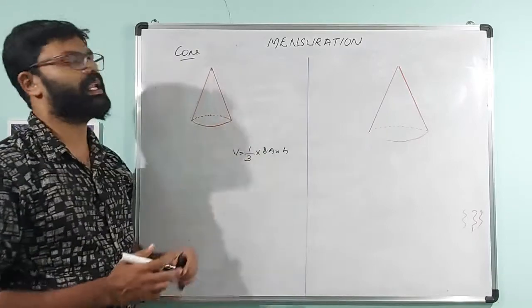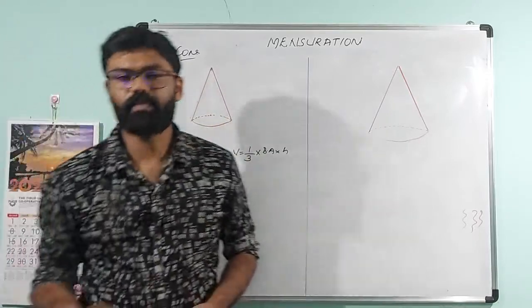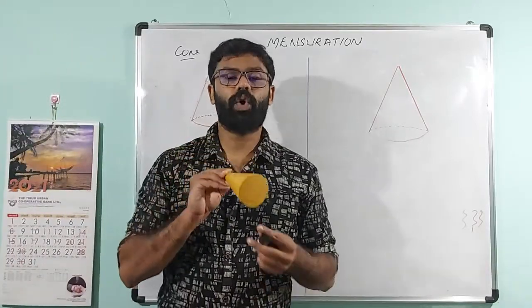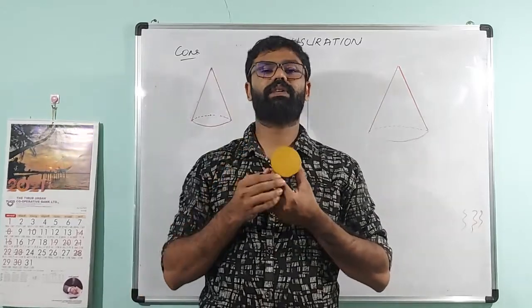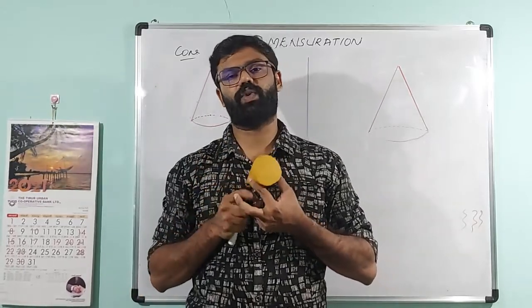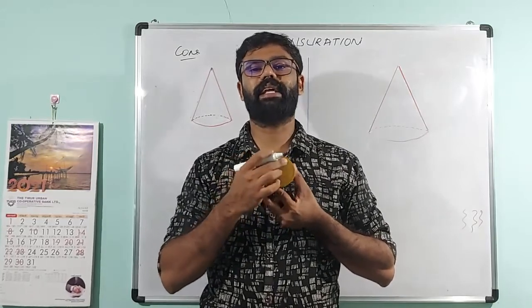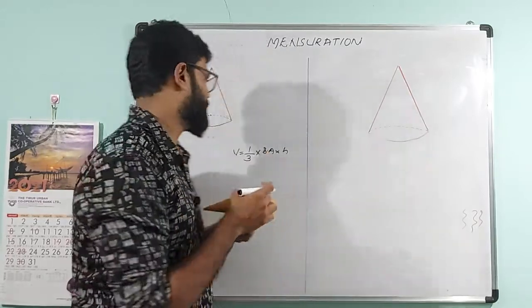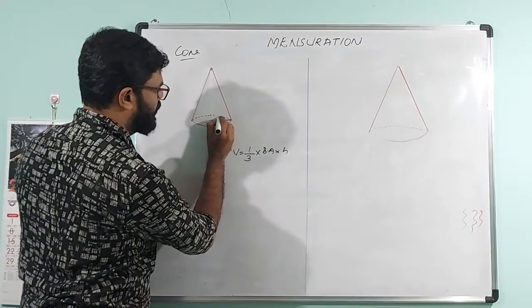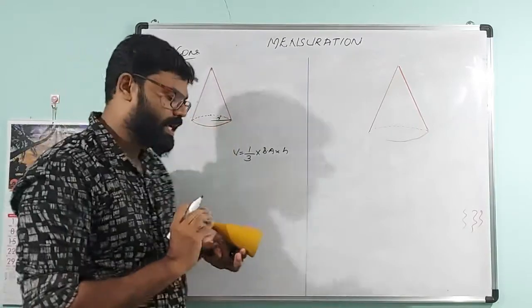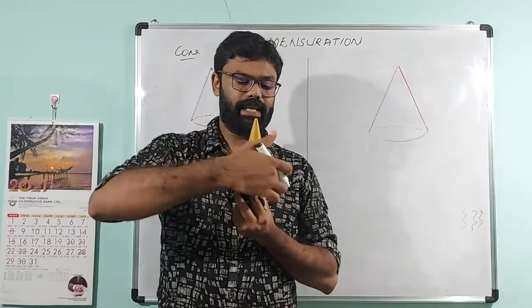Let's go to the cone. What is the cone? This is the cone. The radius is the base circle.